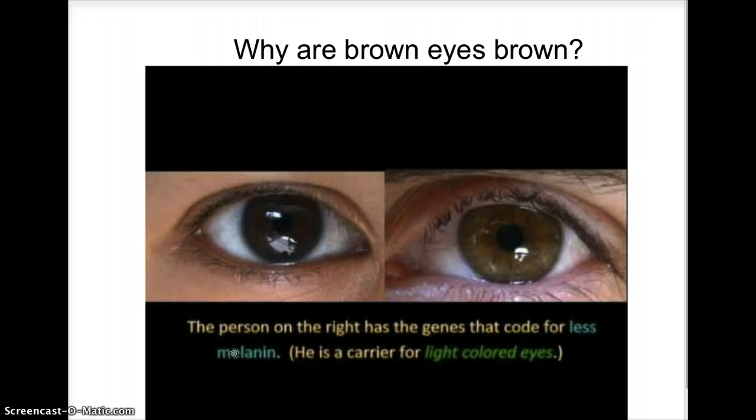So it's honestly almost like our eyes are painted brown to protect us from the sun, and there's different shades of it depending on how much melanin you have. So that's why eyes are brown.